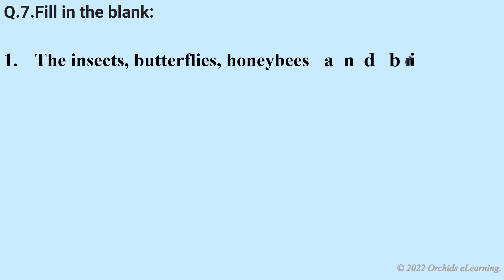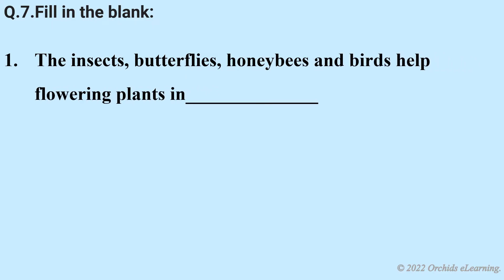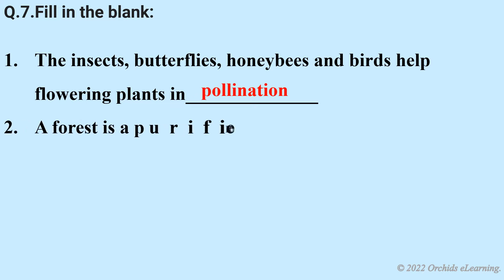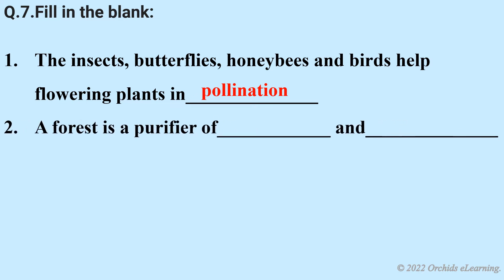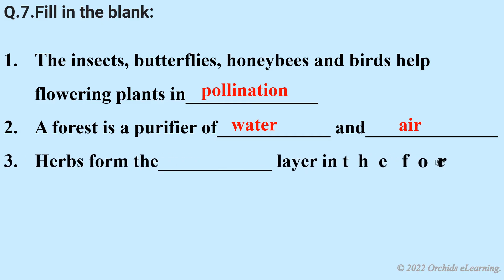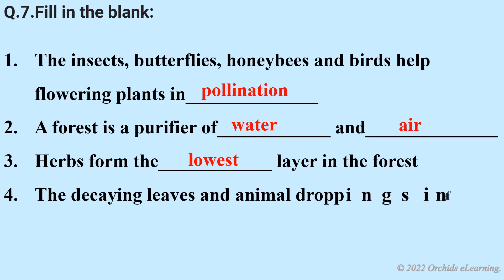Fill in the blanks. The insects, butterflies, honey bees and birds help flowering plants in pollination. A forest is a purifier of water and air. Herbs form the lowest layer in the forest. The decaying leaves and animal droppings in a forest enrich the soil as humus.